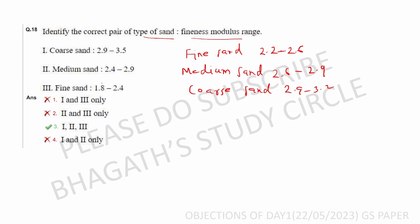Option: Fine sand 1.8 to 2.4 — we have an objection there. Here we also have 2.9 to 3.5, which is a slightly different range for fine sand. Okay.